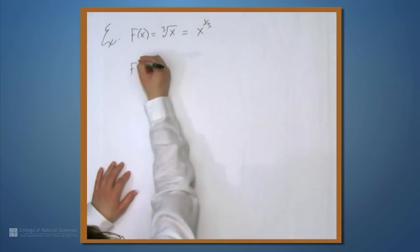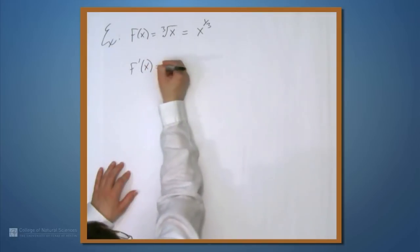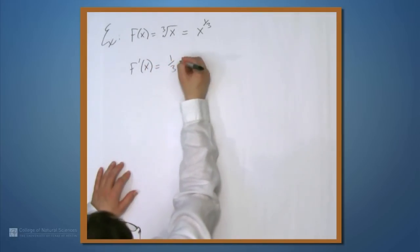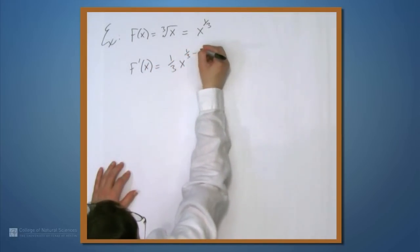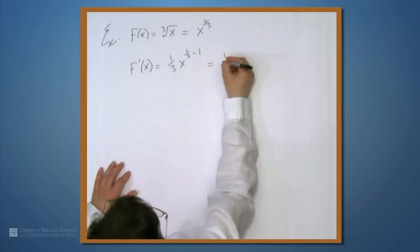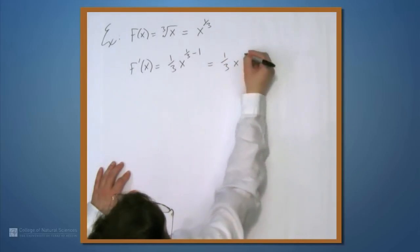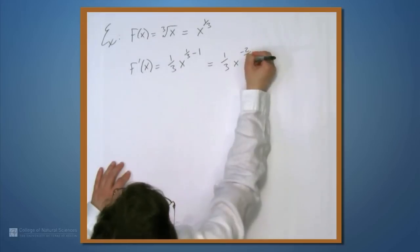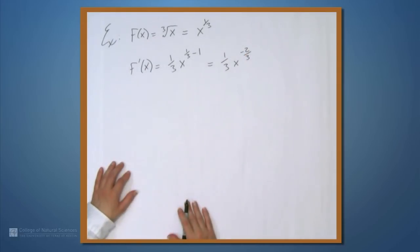So here, f'(x) is 1 third x to the 1 third minus 1. And if we want, we can rewrite this as 1 third x to the negative 2 thirds.